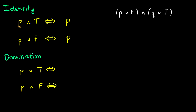Domination laws are a little different. Here, whatever p is doesn't matter. If we have p OR true, well true is always true, therefore this outputs true. p AND false — false is always false, therefore this outputs false. We can see how the truth and falsity are dominating over our formula.